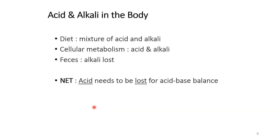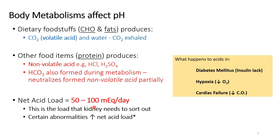This is a very important slide. Dietary carbohydrates and fats — when they are properly metabolized — release carbon dioxide and water. Carbon dioxide is called a volatile acid because you can literally exhale it. So no problems there: the respiratory system is used to remove the volatile acid formed from carbohydrates and fats. Water is not a problem either.